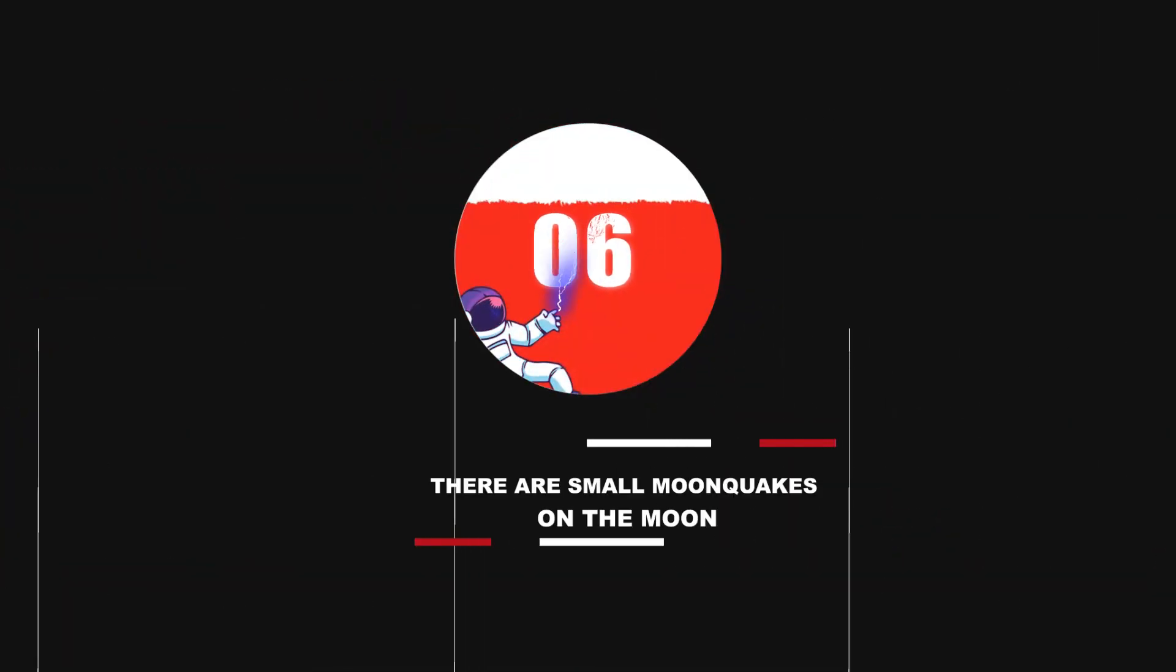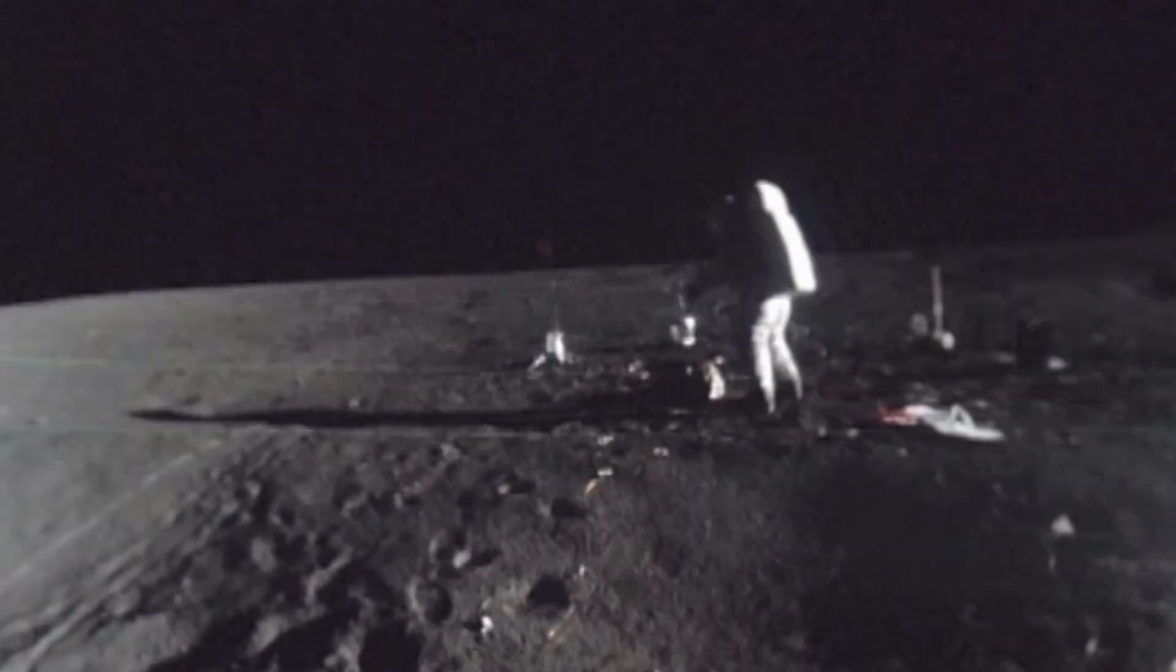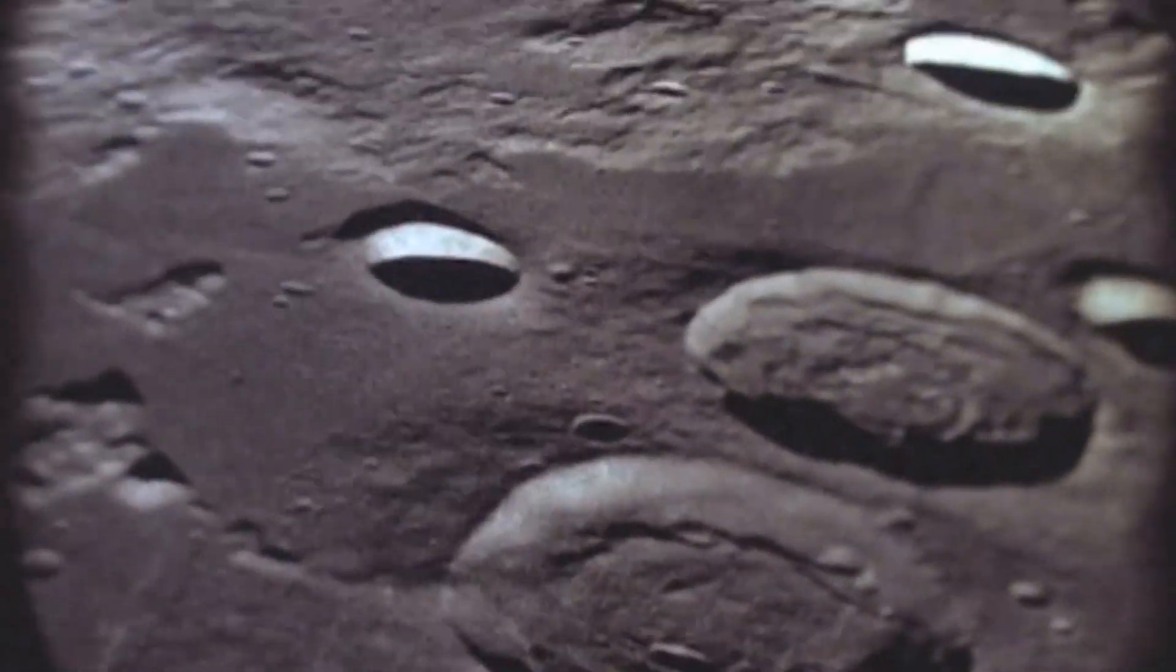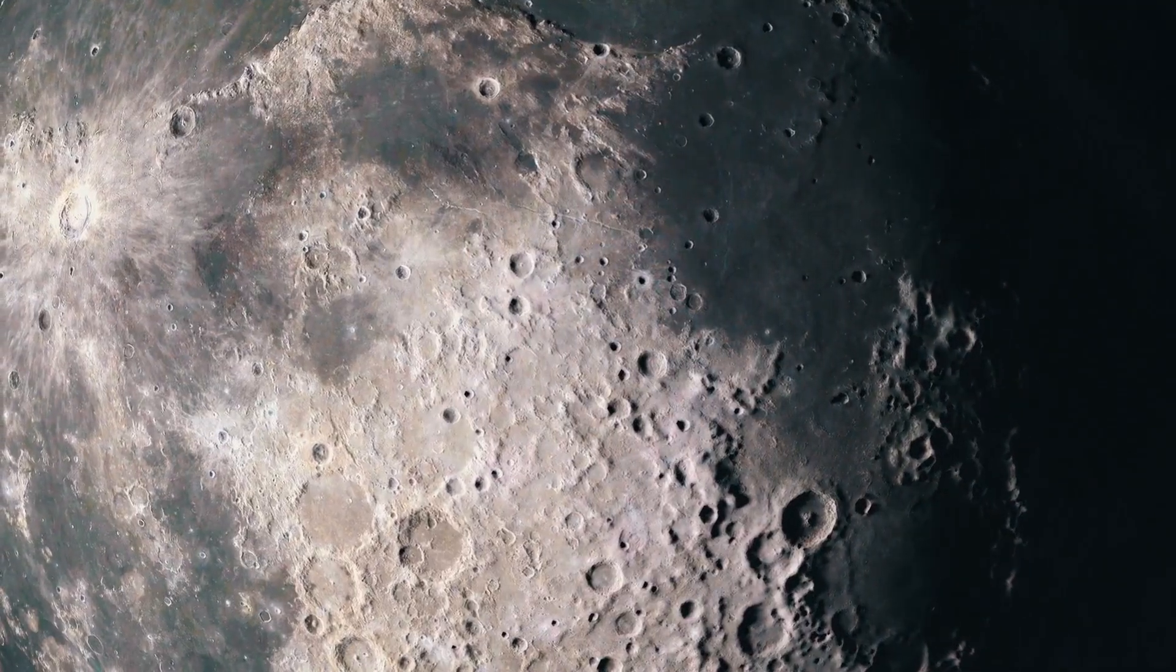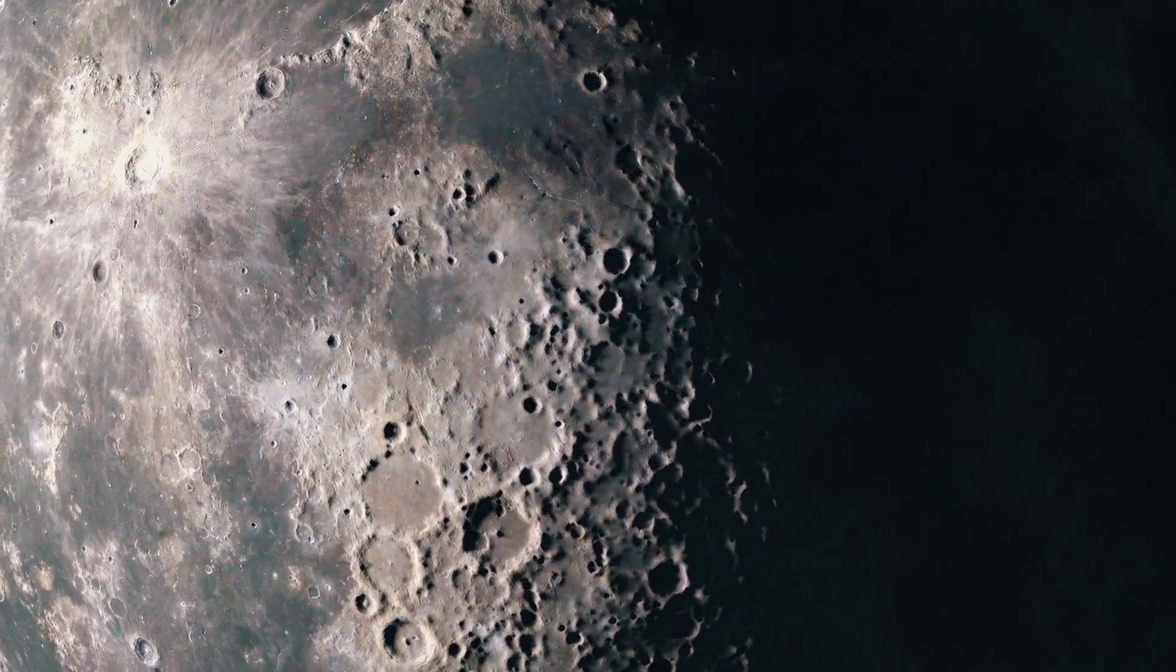Number 6: There are small moonquakes on the Moon. Astronauts discovered this using seismographs during their missions there. They are supposed to occur a few miles under the surface and reflect cracks on the surface. This has led scientists to hypothesize that the Moon has a molten center comparable to the one here on Earth.